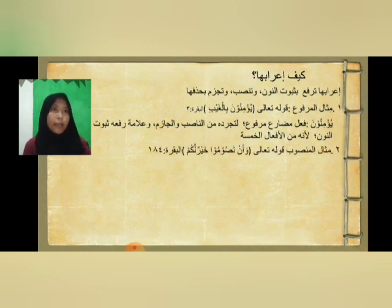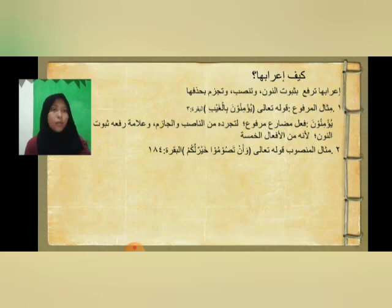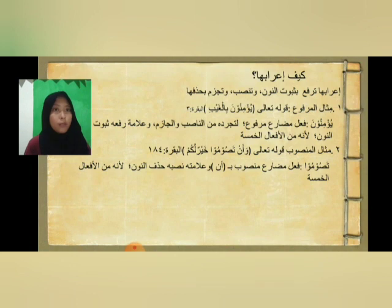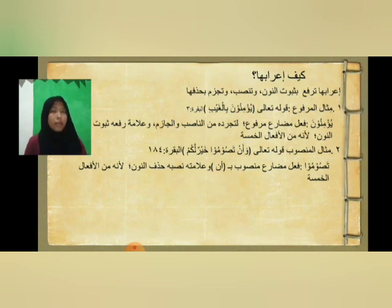Yang kedua, contoh dari dinasopkan dengan membuang huruf nun. Contoh mansub: misalnya firman Allah Ta'ala 'Wa tasumu khairul lakum' — i'robnya: Tasumu adalah fi'il mudori mansub dengan 'an', dan alamat nasob dengan membuang huruf nun karena termasuk dari Af'alul Khamsah.